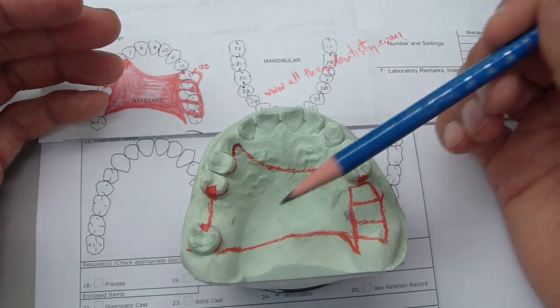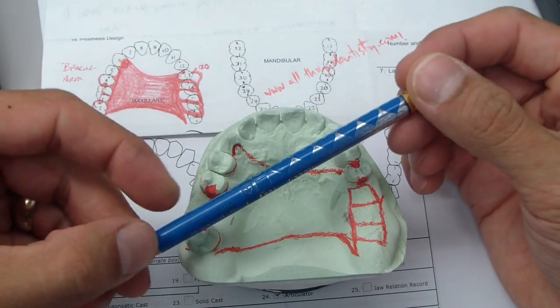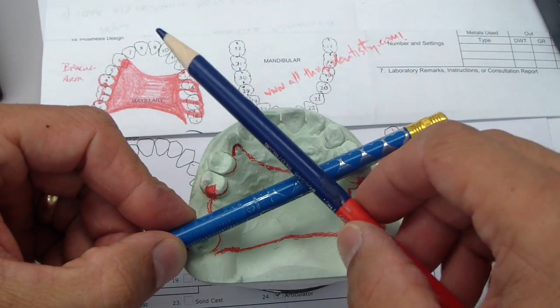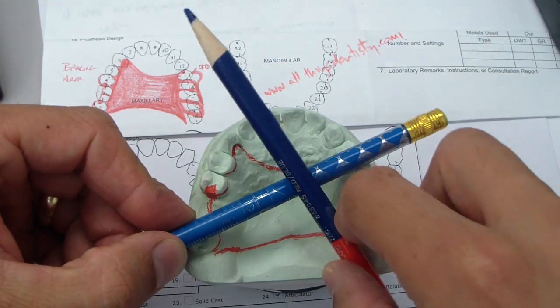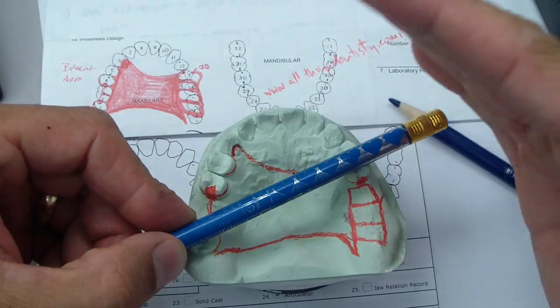Now the most posterior rest seats will be right here, which creates our fulcrum. So essentially you've got a type 1 lever, or the sexy name type 1 lever, or essentially a seesaw that's going to be back and forth when this patient's partial is in her mouth.